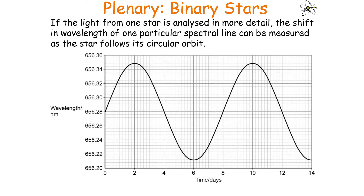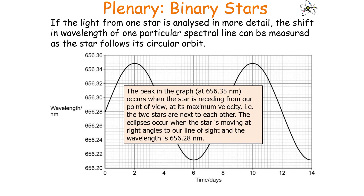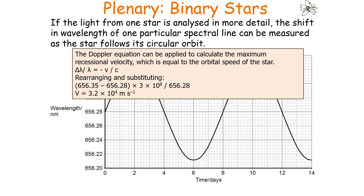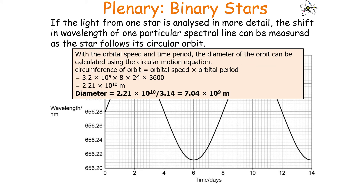If the light from one star is analysed in more detail, the shift in wavelength of a particular spectral line can be measured as the star follows its circular orbit. The peak of the wavelength-shift graph occurs when the star is receding at maximum velocity, when the two stars are side by side. The eclipse occurs when the star is moving at right angles to our line of sight. In this diagram the orbital period is 8 days. The Doppler equation can calculate the maximum recession velocity, which equates to the orbital speed. With orbital speed and time period, the diameter of the orbit can be calculated using the circular motion equation: circumference = orbital speed × orbital period.